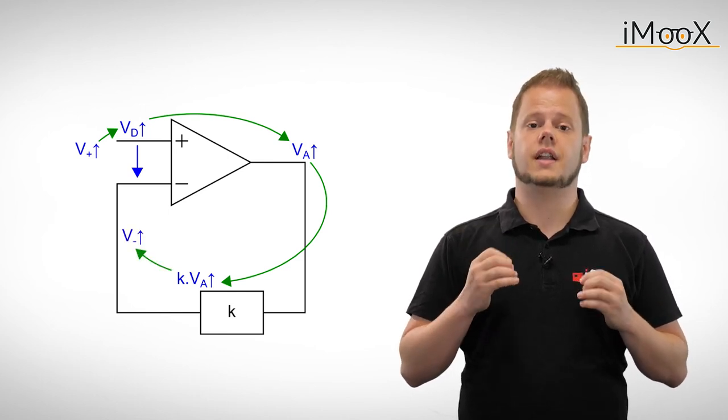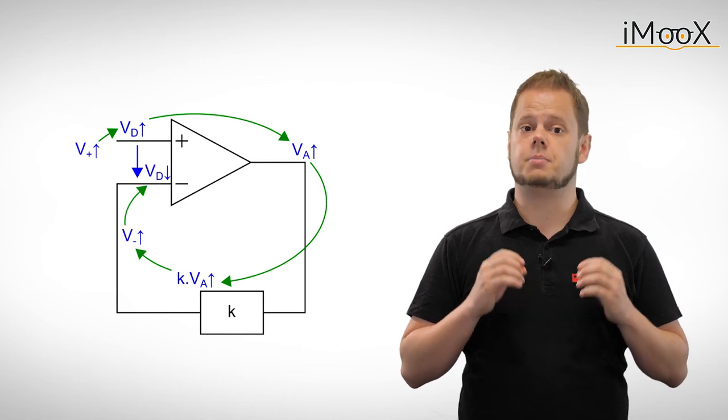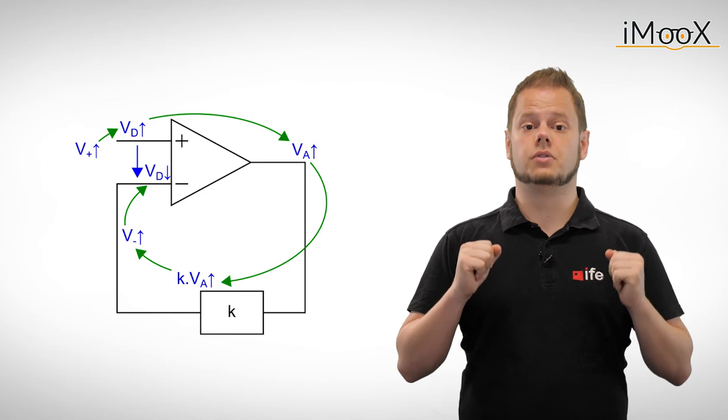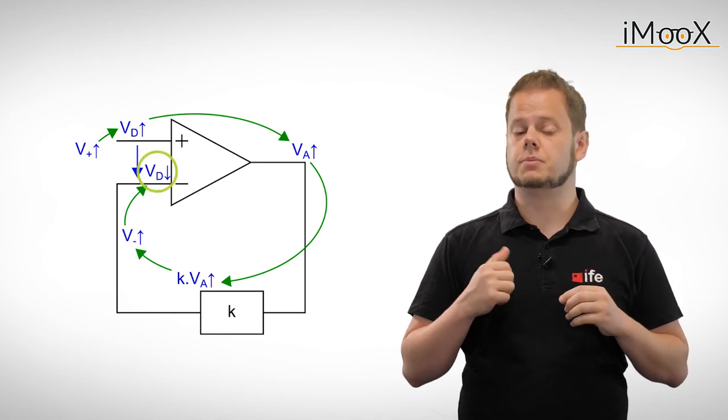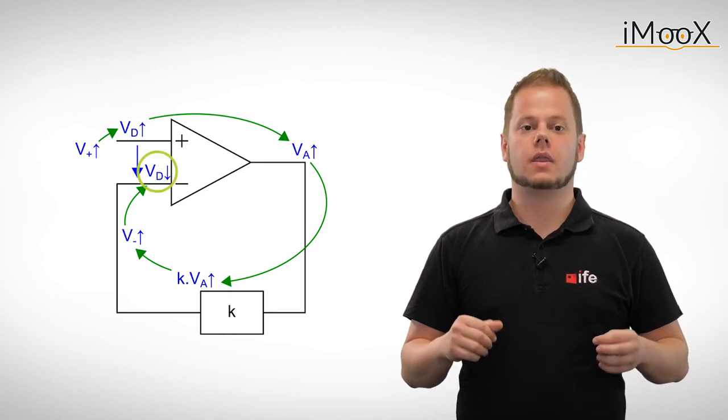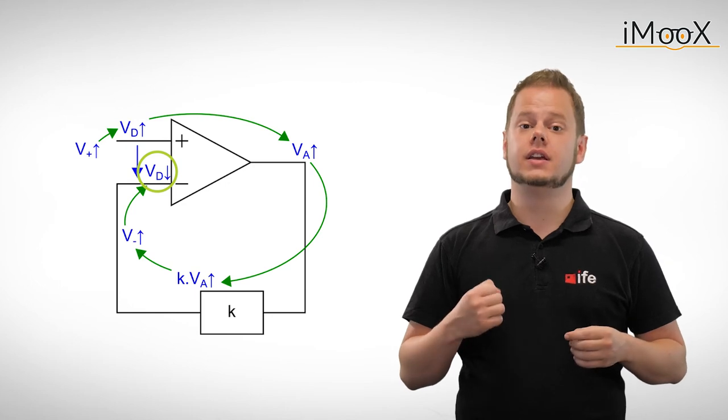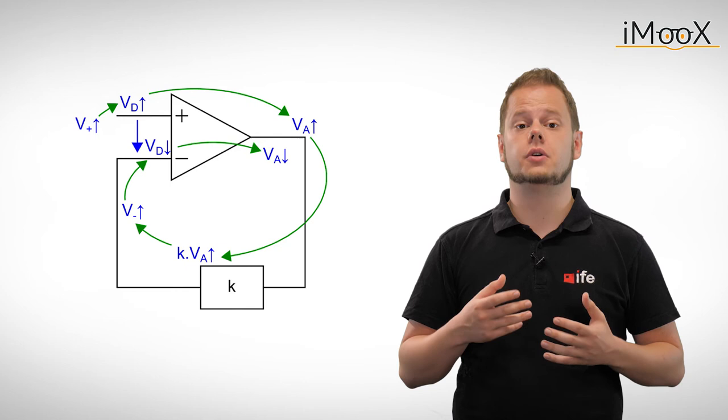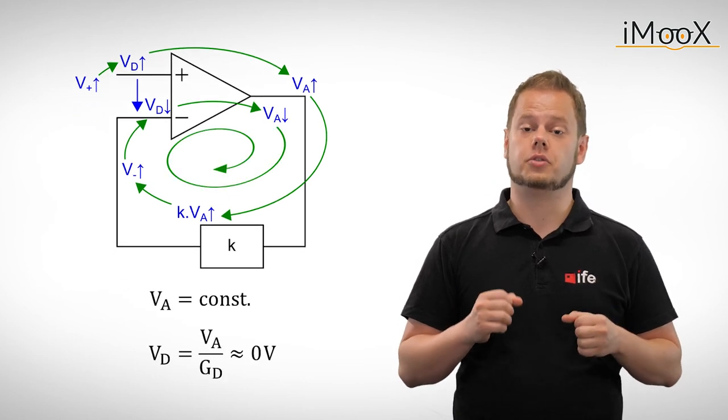Thus the voltage at the inverting input V- approaches the input voltage V+, and the differential mode voltage VD becomes smaller. This decrease in VD causes the output voltage VA to decrease again until the circuit has reached a constant output voltage.